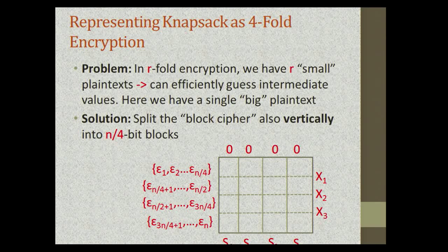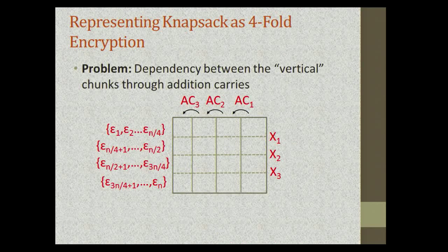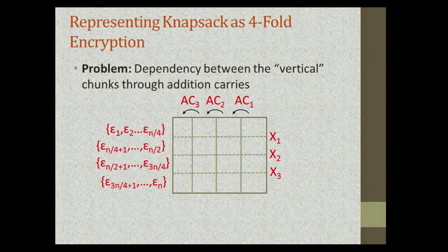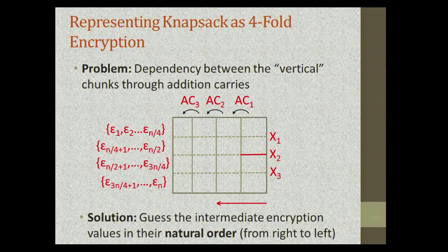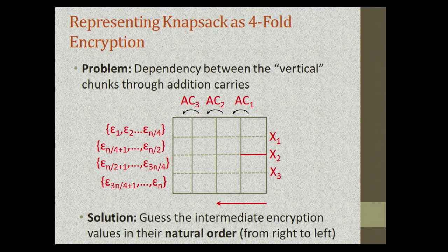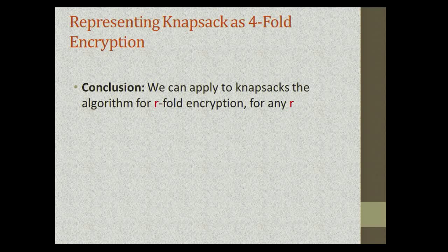Splitting vertically introduces another problem: there are carries propagating throughout the block cipher causing dependencies between vertical chunks. To process a vertical chunk over an encryption, we must know the carries. The solution is quite simple: when we apply our dissection algorithms, we process the blocks in their natural order from right to left, so when we come to process a vertical chunk, we already know the required carries. The conclusion is that we can apply our techniques to the knapsack problem for any R.